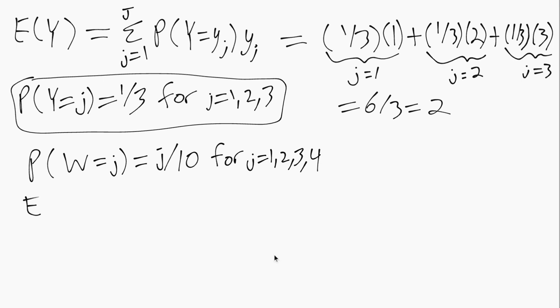So again using the formula, the mean of W is that sum of the probabilities times the values. In this case for J equals 1, the probability is 1/10 and the value is 1. That's our J equals 1. And just to clarify here, instead of little yj, the values are just J itself.